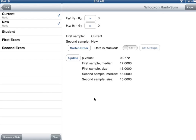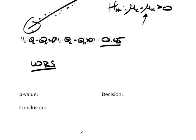There is my p-value. And it gives the sample medians. The sample median for the current was 17. The sample median for the new was 15. There's a 17.